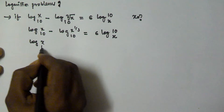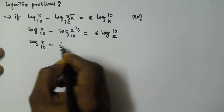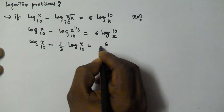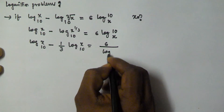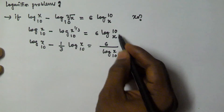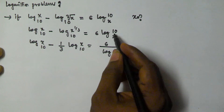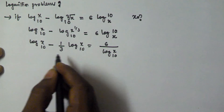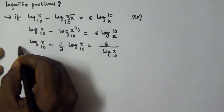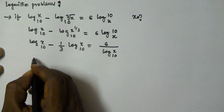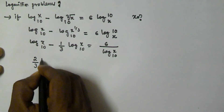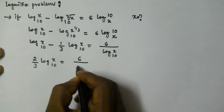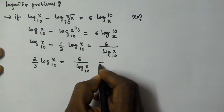This can be written as log x base 10 minus 1 by 3 log x base 10 is equal to 6 divided by log x base 10, because when we write log 10 base x with x as the base, the base and value interchange. So 1 minus 1 by 3 gives us 2 by 3 log x base 10 is equal to 6 by log x base 10.